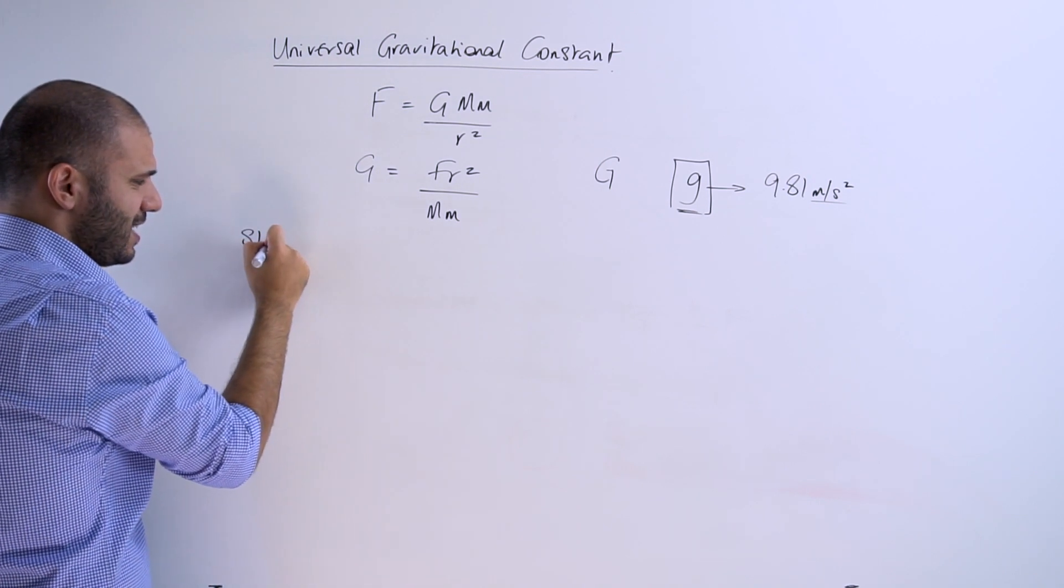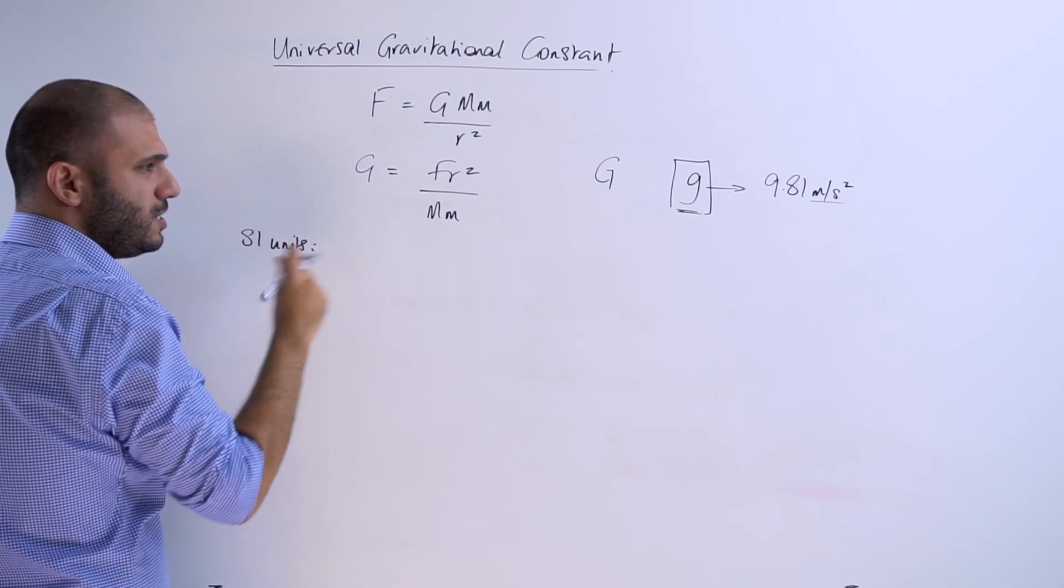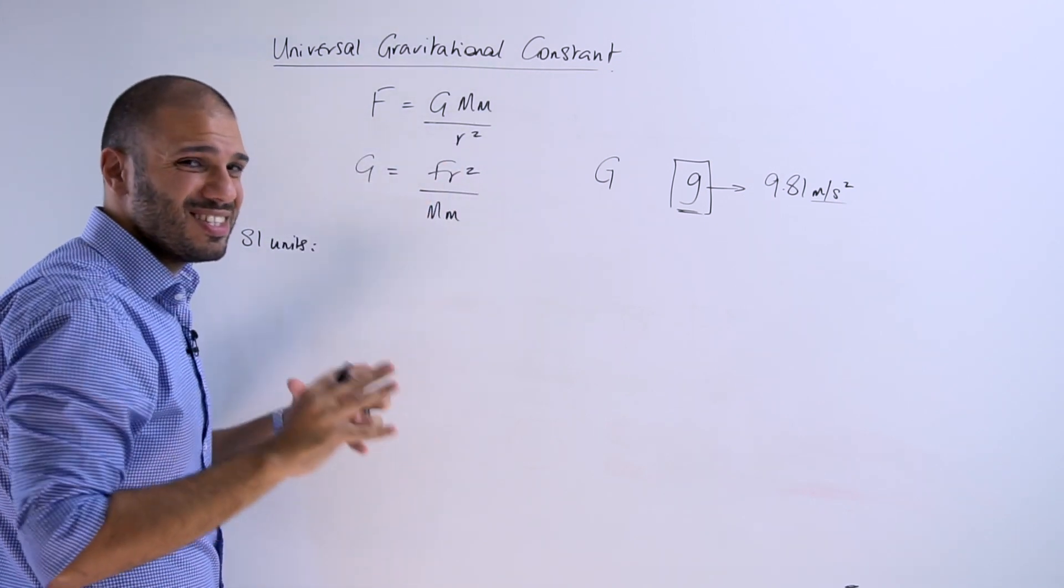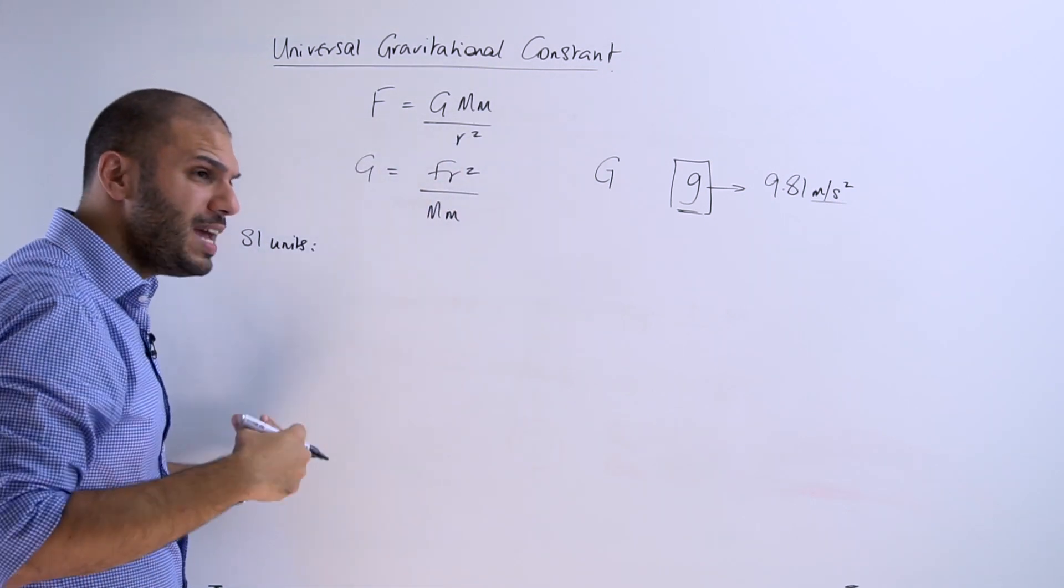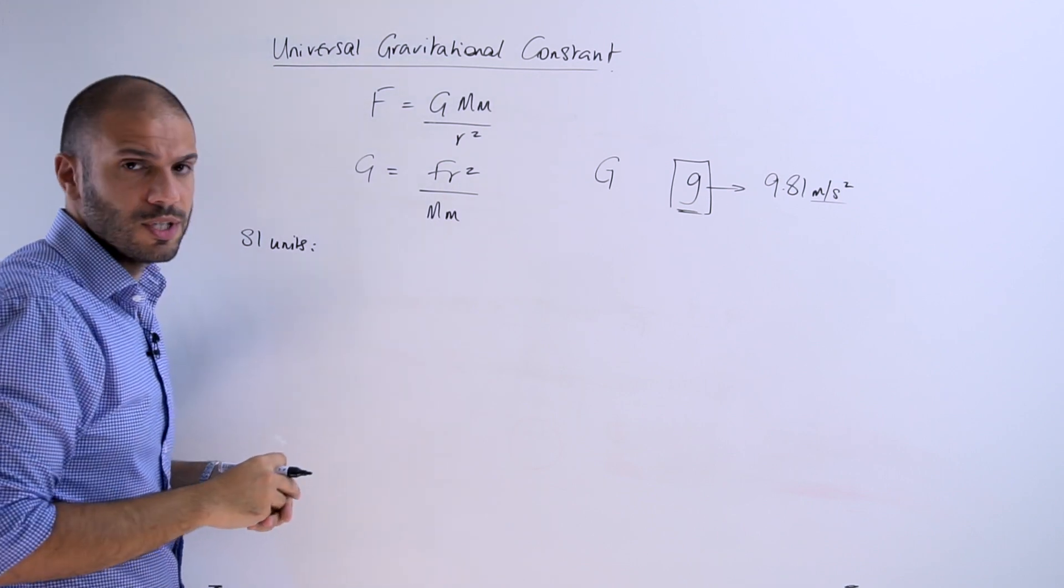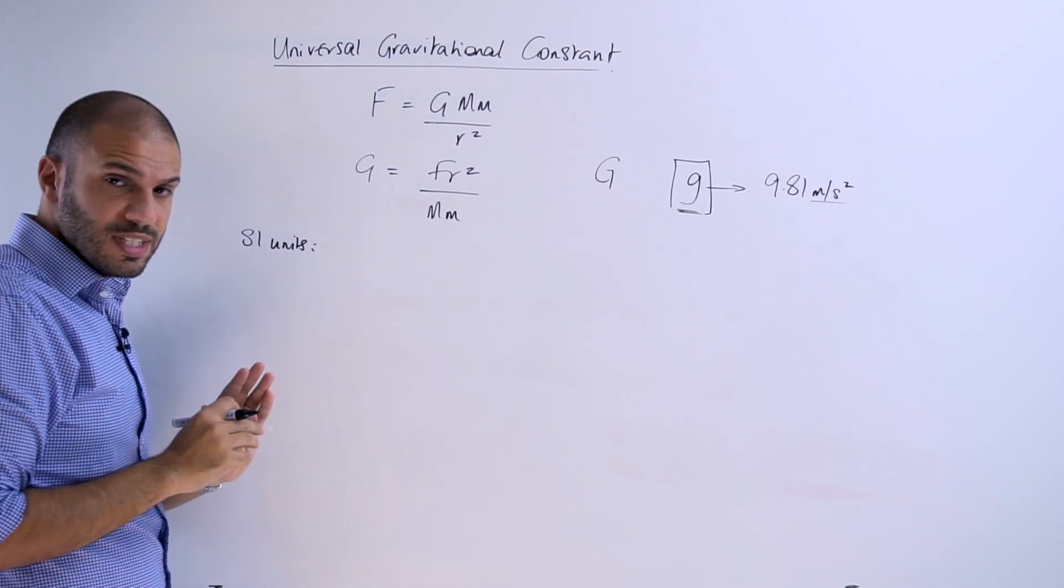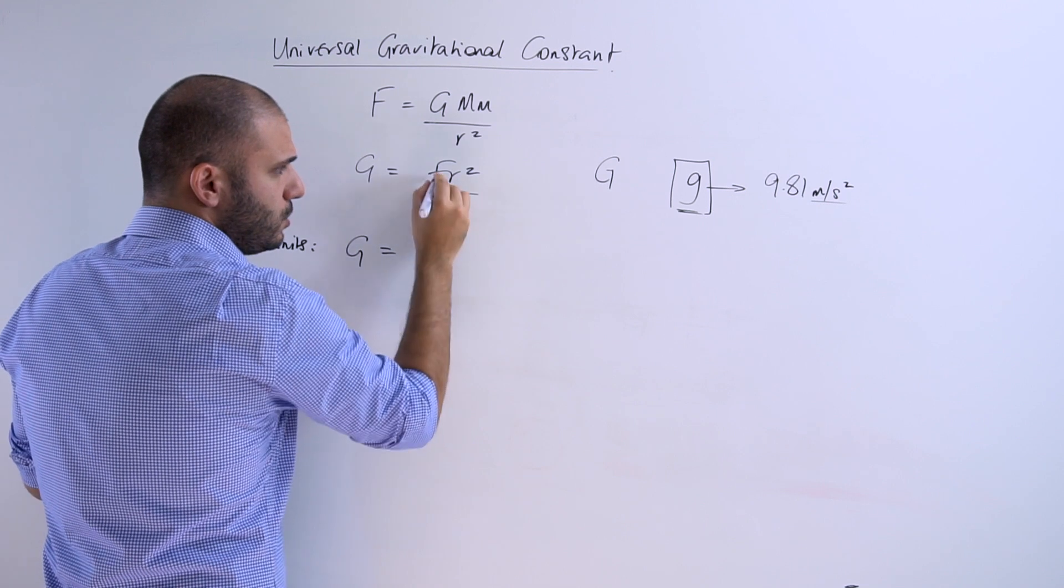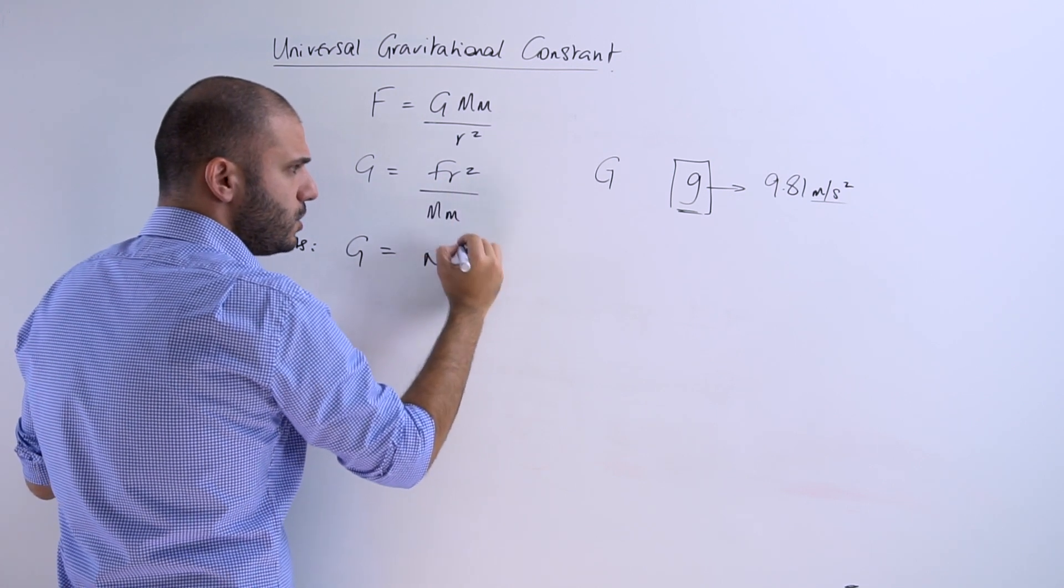If we are after SI units, then we need to convert all of those in their SI units. If we're asked for base units, then we convert those into base units. Let's go with SI units first. G is equal to force. Its unit is newtons.